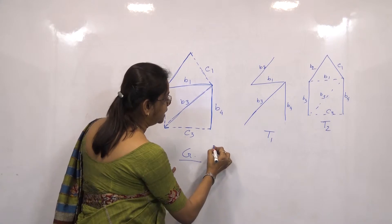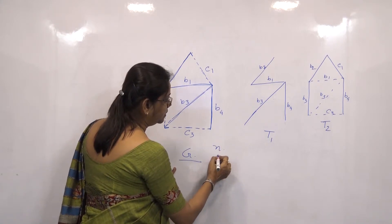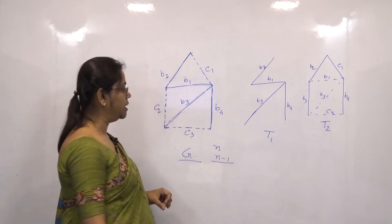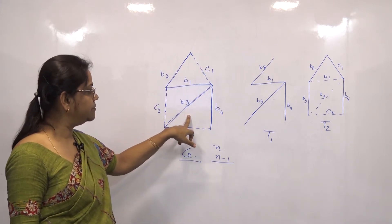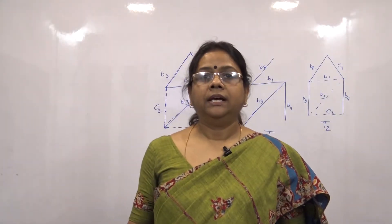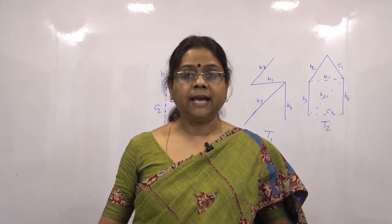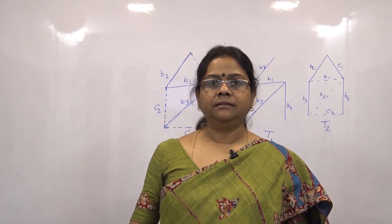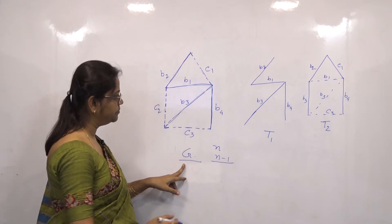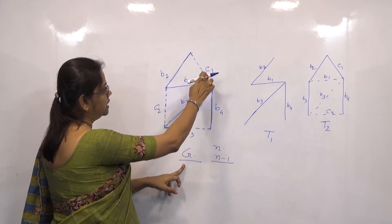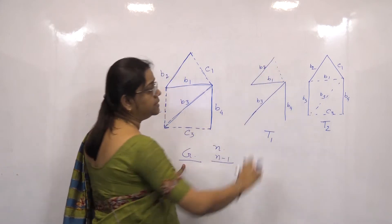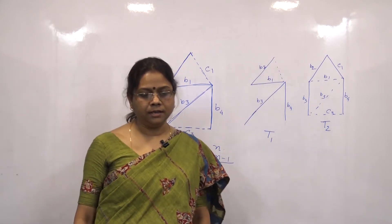If G contains n vertices, the spanning tree of G will contain n-1 edges. For example, if G contains 5 vertices, any spanning tree will contain 4 edges. Now, in a spanning tree, if we add any of the chords — here chords are c1, c2, c3 — if we add c1, then we will get a circuit which is called a fundamental circuit.